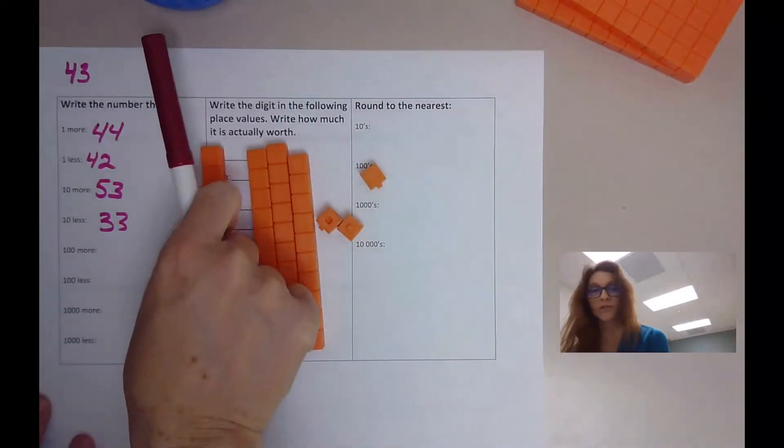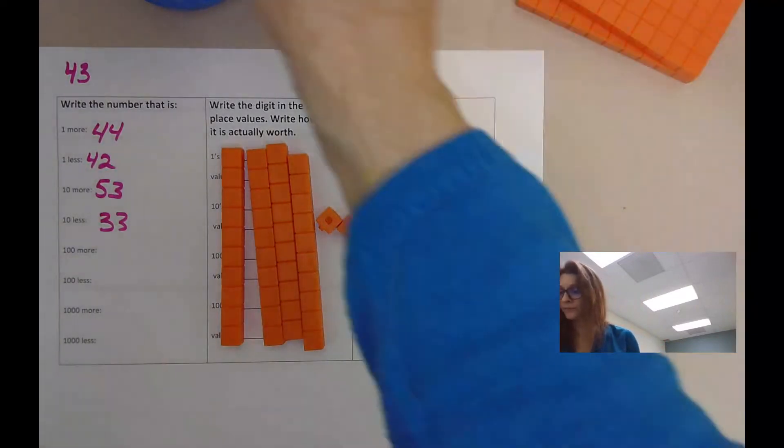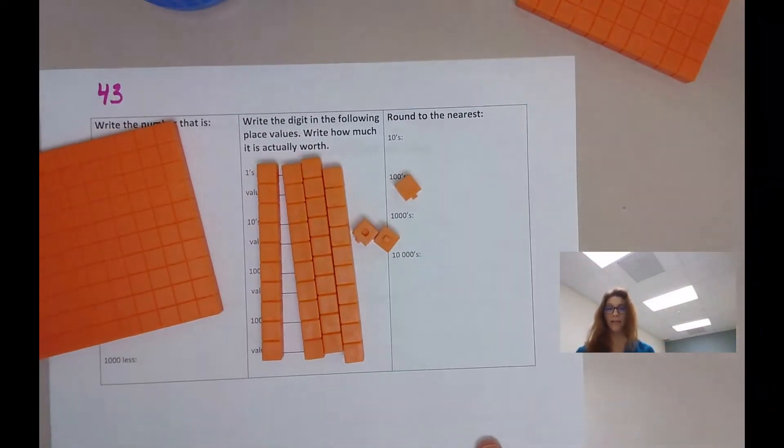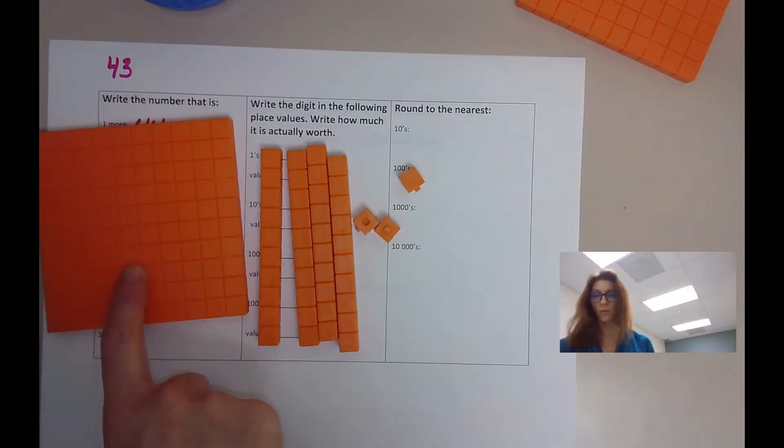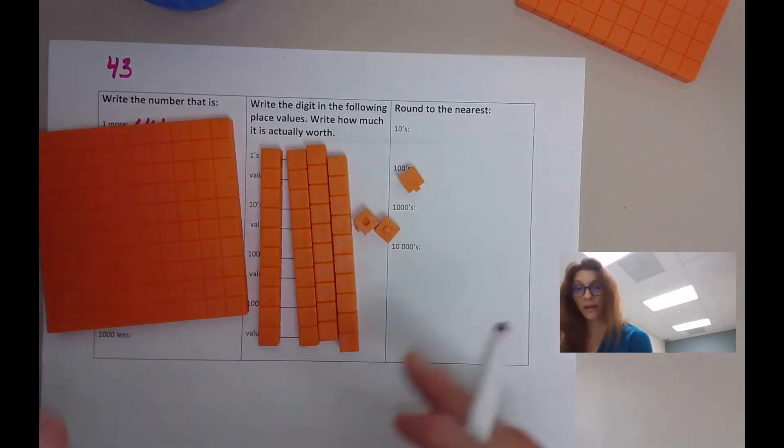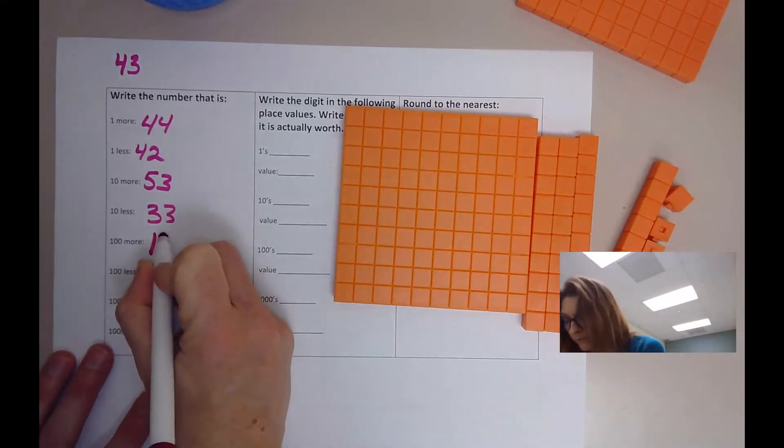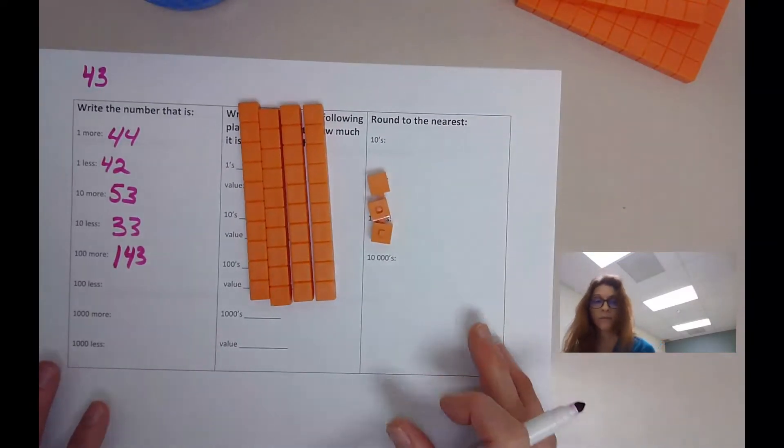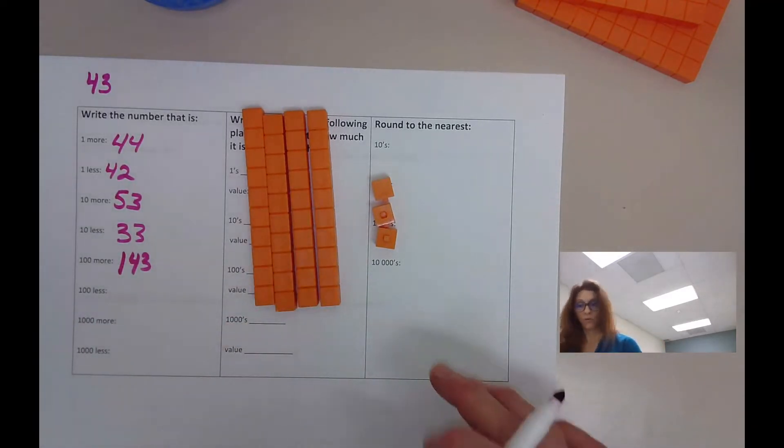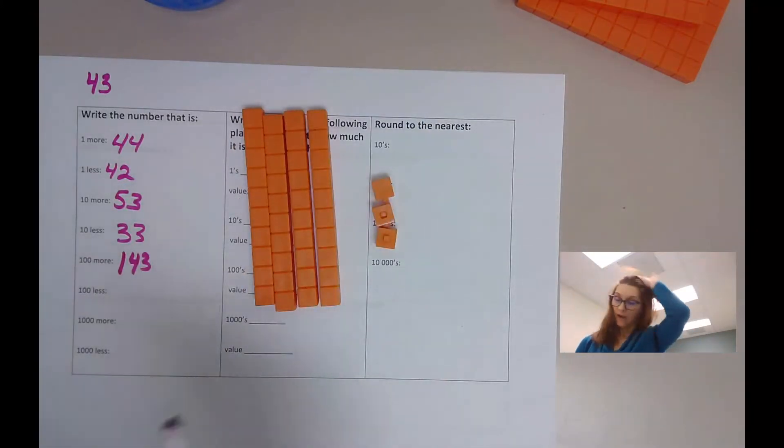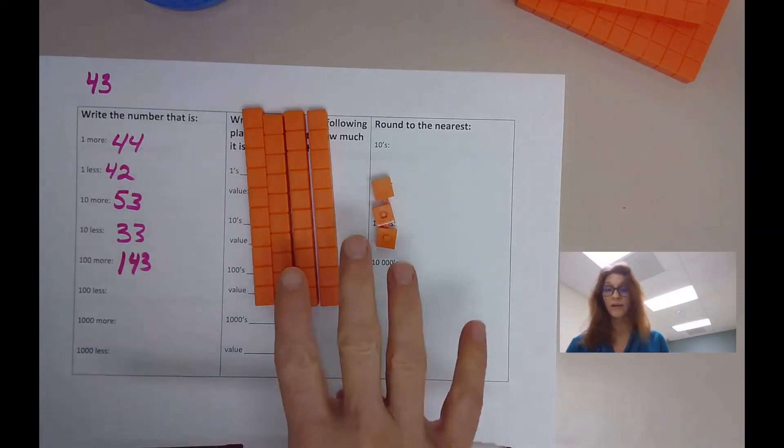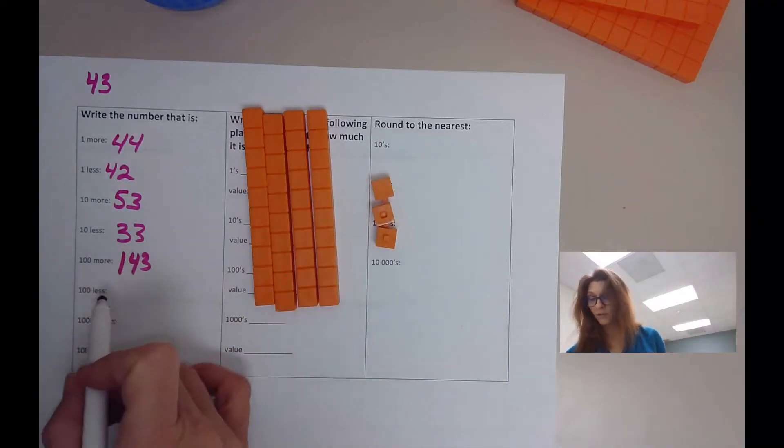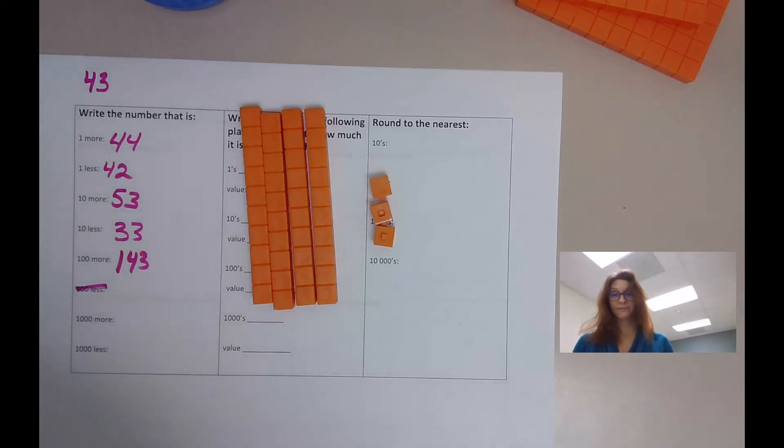Go back to your original number 43. 100 more. That means we're gonna add in a flat of 100. That's 143, that's your number. 143. Go back to your original number, 43. 100 less. I can't. I do not have 100. I only have 43. I can't take 100 away from this unless I'm going to go into the negatives. But until you're in grade 5, I'm not expecting you to do that. So we're done. 100 less, we can't do that. Cross it off, don't do it.